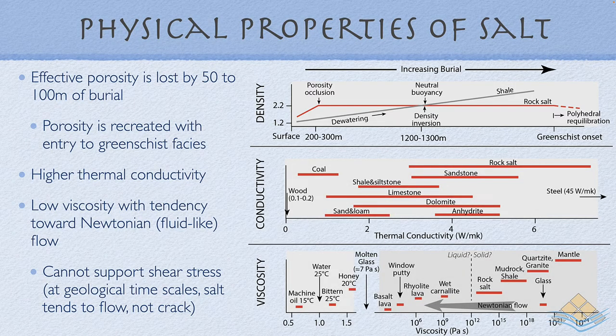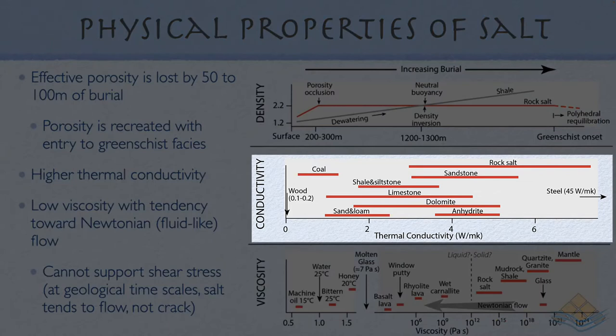Salt also has higher thermal conductivity. Consider what happens when you place a stick of wood versus a metal rod in a fire — you must release the metal rod far sooner because steel has much higher conductivity. Salt is like that metal rod, and it can also change shape, creating vertical appendages or pancake-like layers that produce conductivity contrasts in what would otherwise be a homogeneous, gradually increasing temperature field with burial.